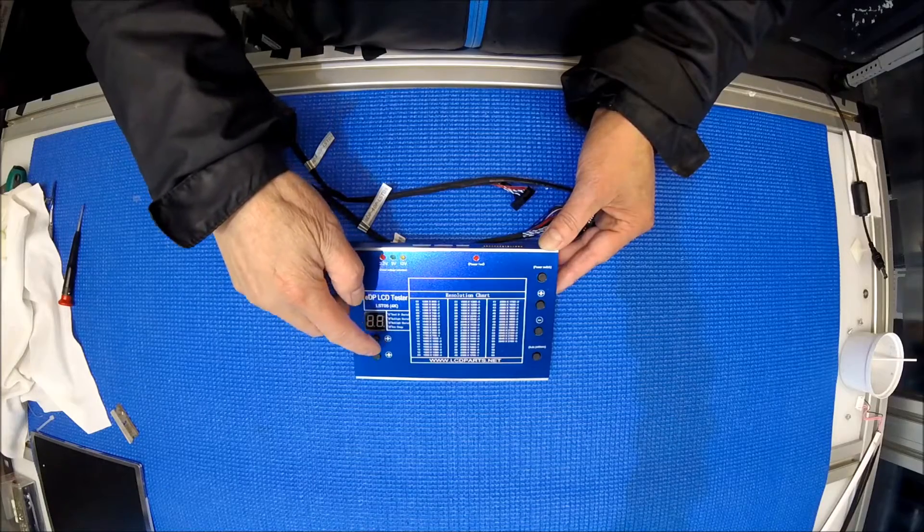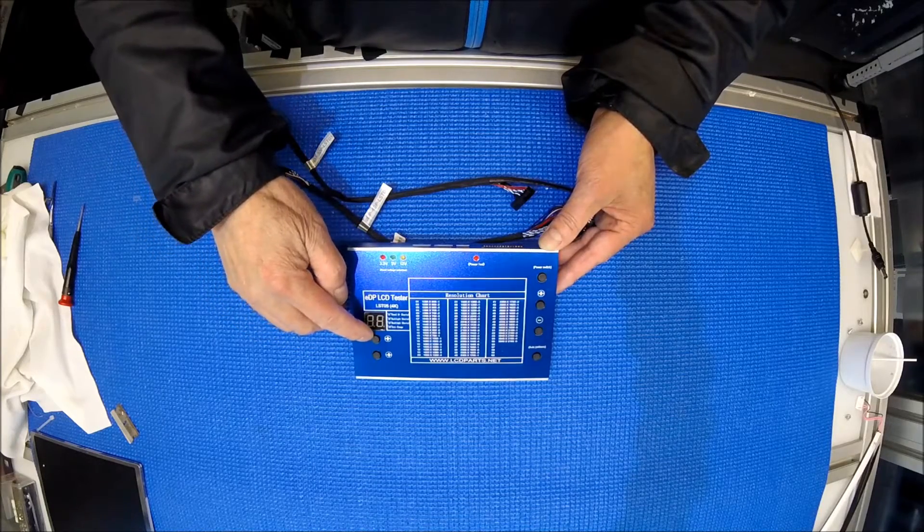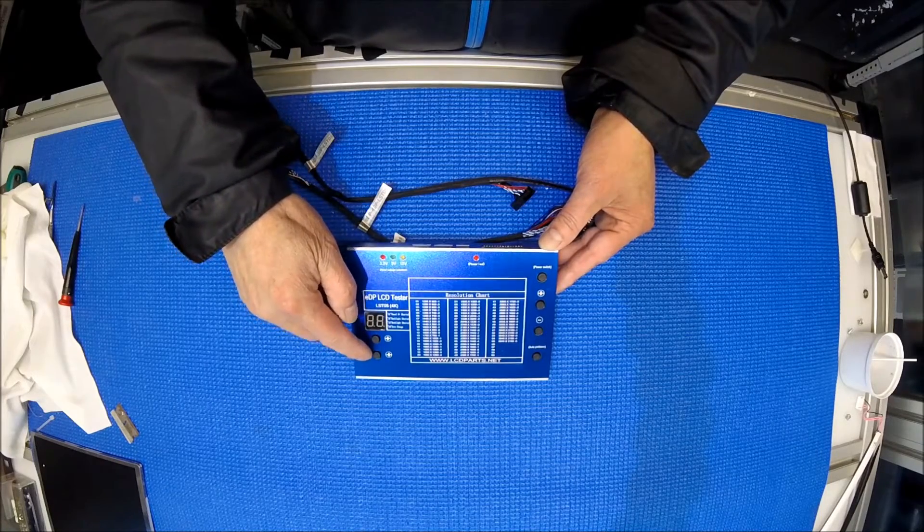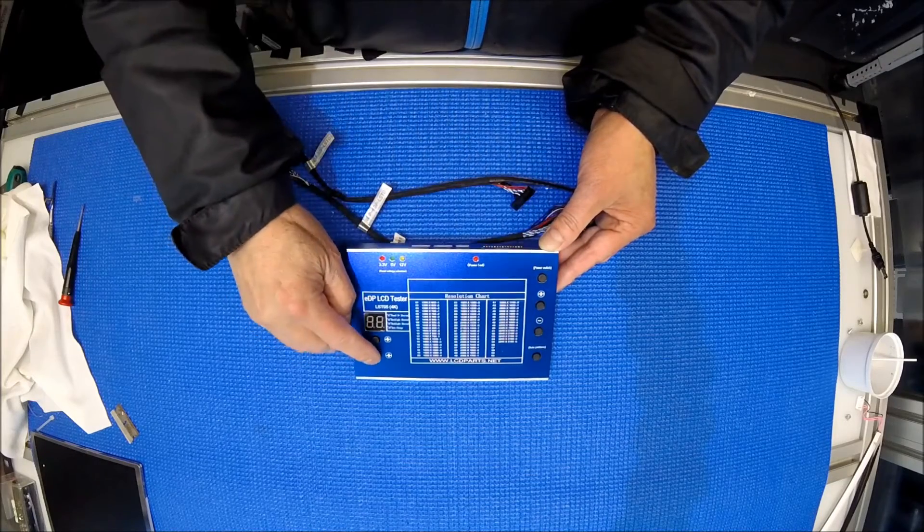You can see there's 2 plus buttons. The reason is because this first one is changing single digit from 0 to 9, and this one is changing 10 digits at a time.